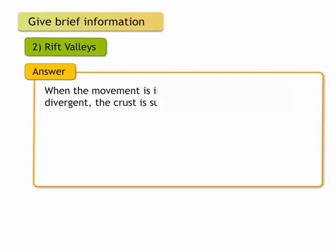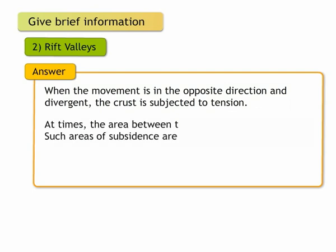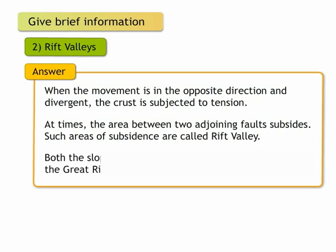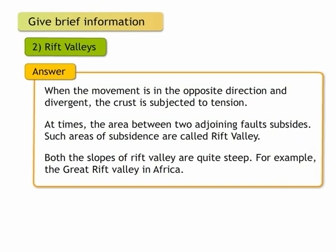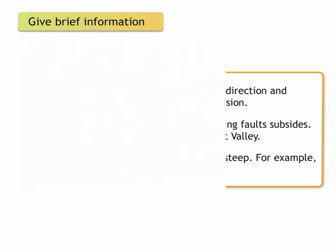2. Rift Valleys. When the movement is in the opposite direction and divergent, the crust is subjected to tension. At times, the area between two adjoining faults subsides. Such areas of subsidence are called rift valley. Both the slopes of rift valleys are quite steep. For example, the great rift valley in Africa.